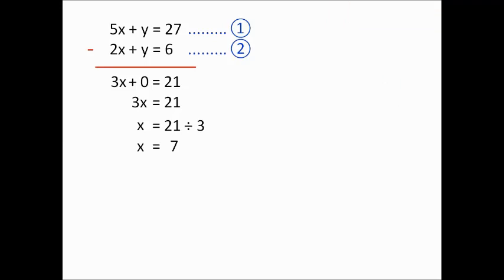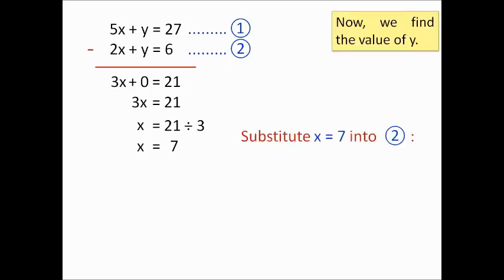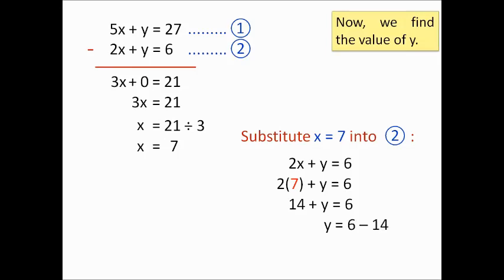The next step is to find Y. There are two equations given — equation 1 and equation 2 — and you can substitute X equals 7 into either one; you'll get the same answer. I've decided to substitute into equation 2: 2X plus Y equals 6. Replacing X with 7 gives 2 times 7, which is 14. So 14 plus Y equals 6, and Y equals 6 minus 14, giving a final answer of Y equals negative 8.